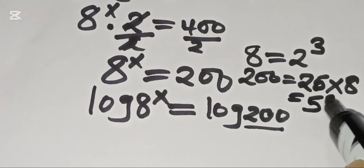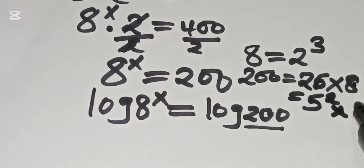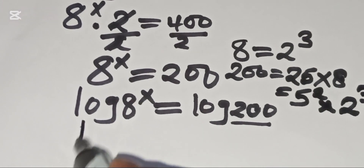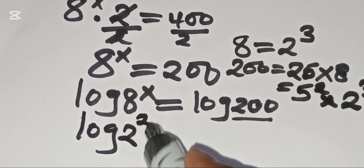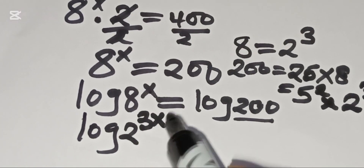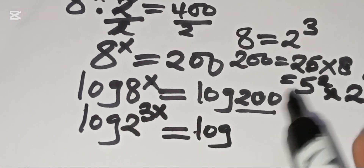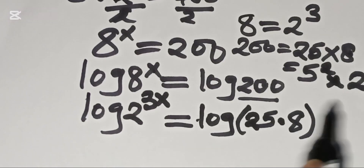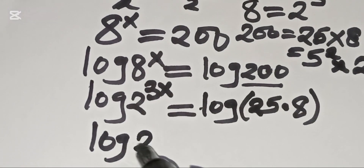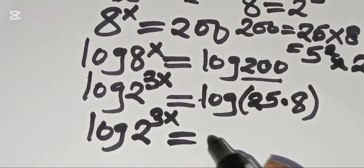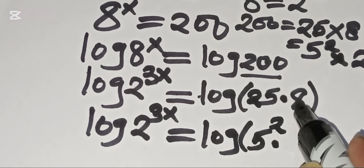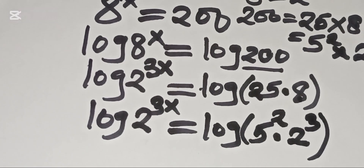From here, 25 can be expressed as 5 squared, and 8 as 2 raised to the power 3. So let's substitute: we have log of 2 raised to the power 3x, which equals log of 5 squared multiplied by 2 raised to the power 3.